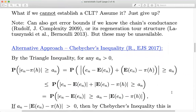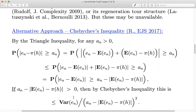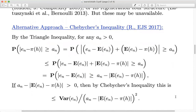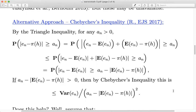Because I've written it as something minus its expected value, that's the standard form for Chebyshev's inequality: the probability that a random variable differs from its mean by more than a positive number is less than or equal to its variance divided by that number squared. So the probability that the absolute deviation of the estimate from its expected value is bigger than (a_n minus the bias term) is bounded via Chebyshev by the variance divided by that denominator squared.